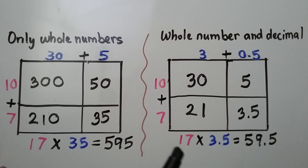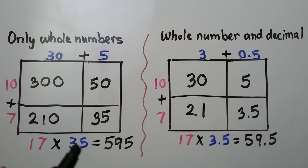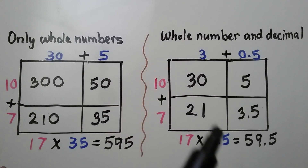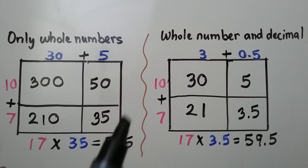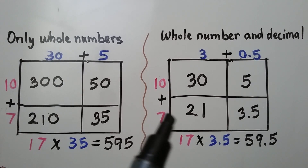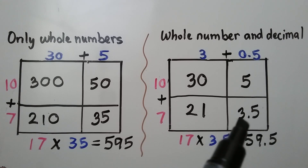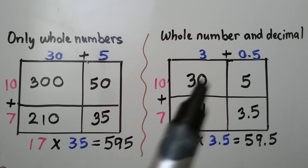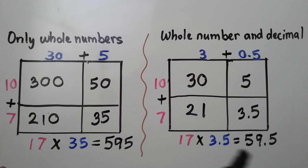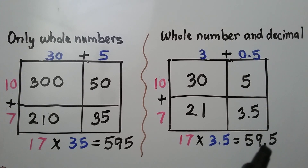If we're multiplying a whole number and a decimal, we have 17 times 3 and 5 tenths. The only difference is the decimal point — this is 35 whole, this is 3 and 5 tenths. We break apart the 17 into a 10 plus a 7, and the decimal as a 3 plus a 5 tenths. We get partial products of 30, 5, 21, and 35 tenths (regrouped as 3 and 5 tenths). We add all the partial products and get 59 and 5 tenths. The factors and product have the same digits — the only difference is one decimal place value hop in the factor and one in the product.